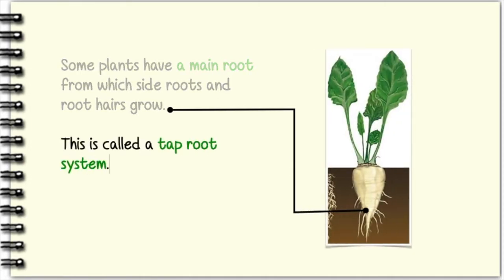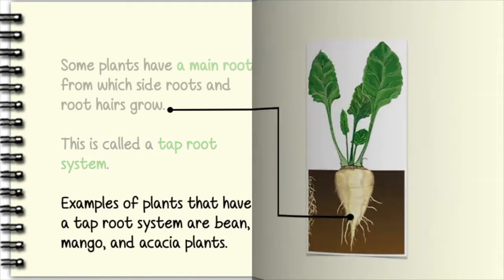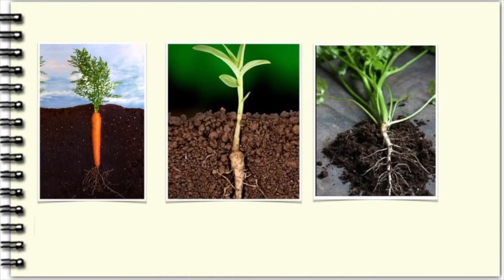Examples of plants that have a tap root system are bean, mango, and acacia plants. These plants have a tap root system.